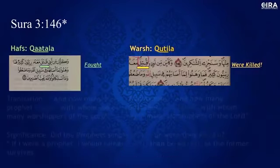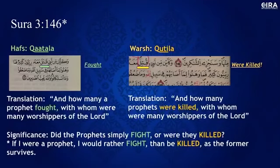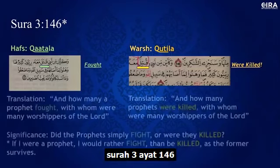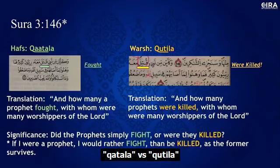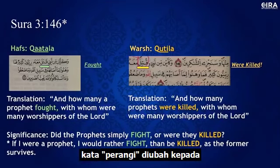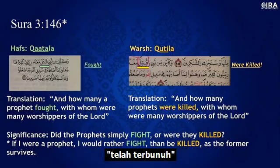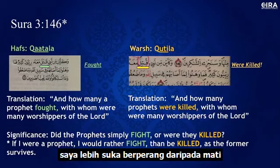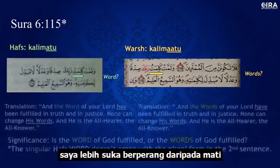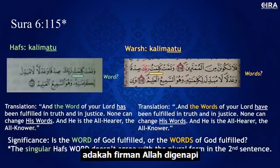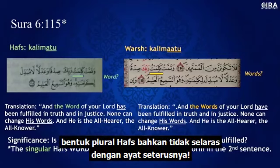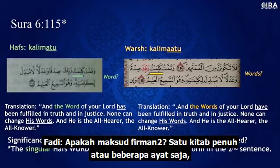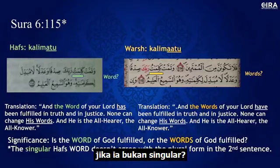In Surah 3:83, 'shall they be returned' changes wording in Warsh. Then 'Katala' versus 'Kutila' — 'how many a prophet fought' changes to 'how many a prophet were killed.' Did the prophet simply fight, or were they killed? If I were a prophet, I would rather fight than be killed. In Surah 6:115, Hufs has 'the word of God fulfilled' in the singular, but the singular doesn't agree with the plural form in the second sentence — a grammatical mistake. Are we talking about a specific word, a specific passage, or the whole book?